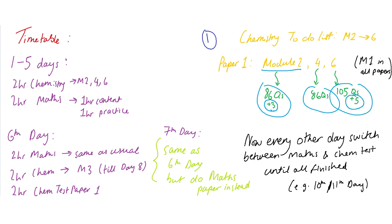And one thing with OCR, module 1 is in all papers. So for paper 1, 2, 3, module 1 is there. But for paper 1 you need 2, 4, and 6 in particular. The reason why I wrote this here is because you need to do two hour chem test paper 1.